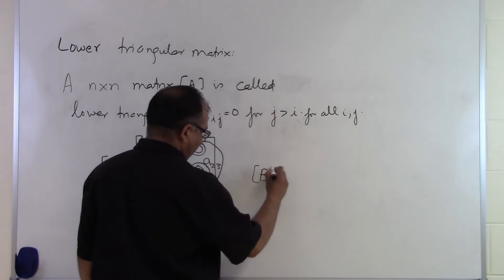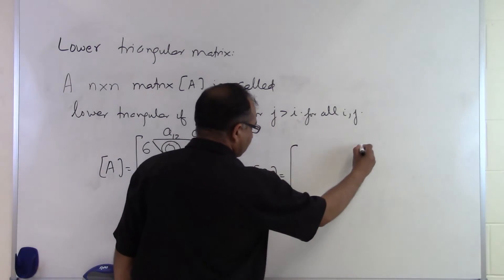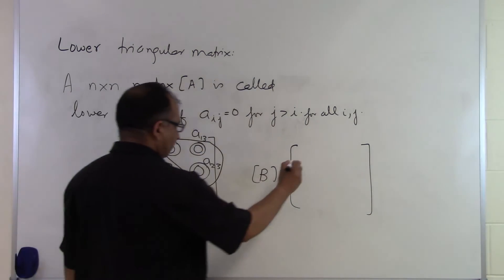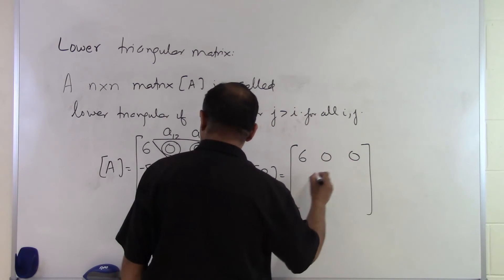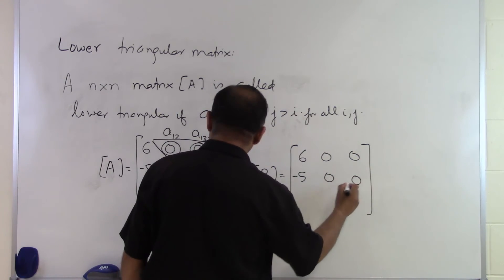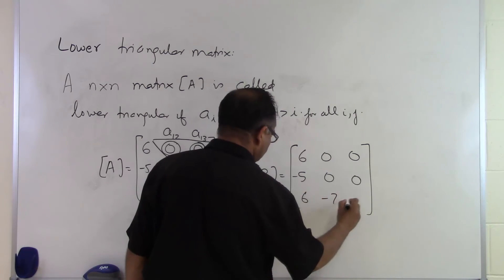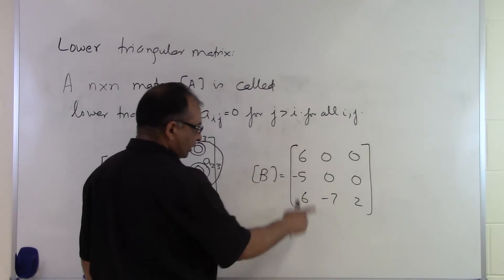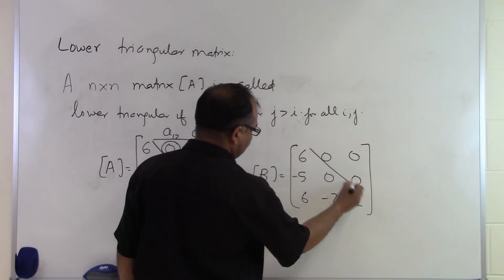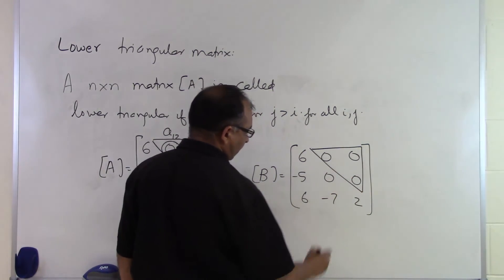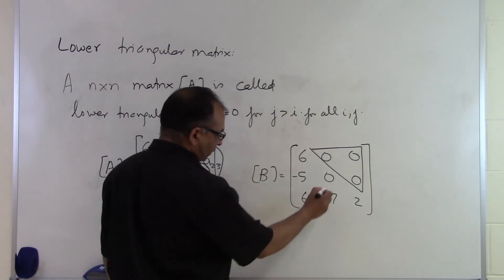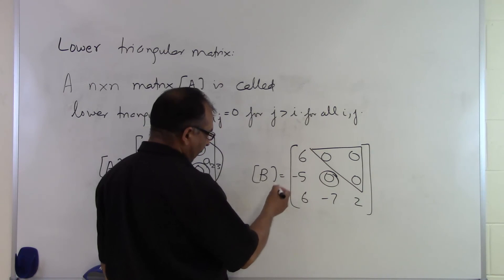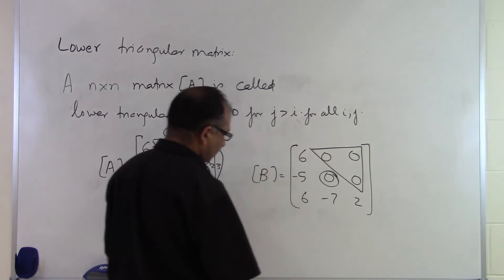Let's look at another example. We have matrix B equal to the same matrix as before, but with one element changed: 6, 0, 0; minus 5, 0, 0; 6, minus 7, 2. It is the same matrix except the 3 is changed to 0. But this is still a lower triangular matrix, because it is the elements above the diagonal that determine whether a matrix is lower triangular — and that zero below the diagonal does not matter in terms of this classification.